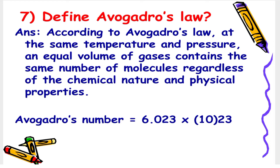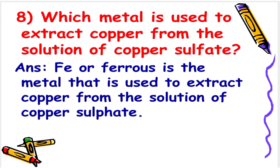Avogadro's number is equal to 6.023 × 10²³. Next: Which metal is used to extract copper from the solution of copper sulfate? The answer is Fe (iron) is the metal that is used to extract copper from the solution of copper sulfate.